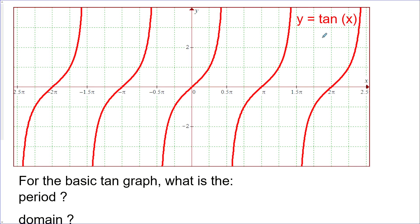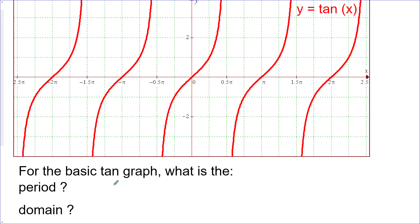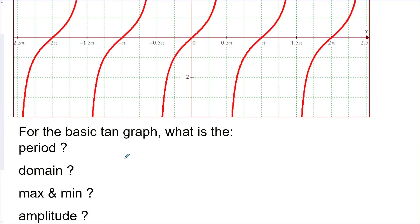Shown in the graph is y equals tan x, which is our most basic tan graph. We want to write down the characteristics from this graph. So what is the period? We can look from intercept to intercept or from vertical asymptote to vertical asymptote. The period is pi units here.